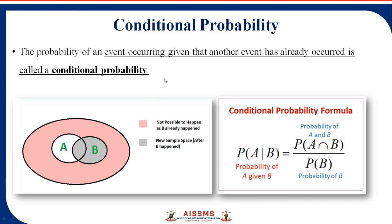Before starting Bayes' theorem, the first point is conditional probability. I think you all are familiar with the concept of probability — probability means possibility: how many times a particular thing will occur. So the probability of an event occurring given that another event has already occurred is called conditional probability.